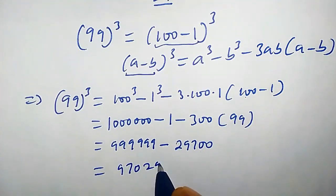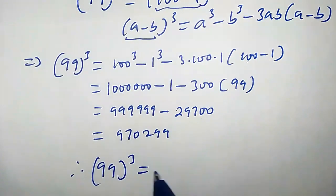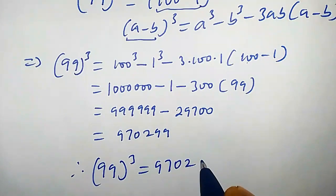Therefore, 99 raised to the power of 3 equals 970,299.